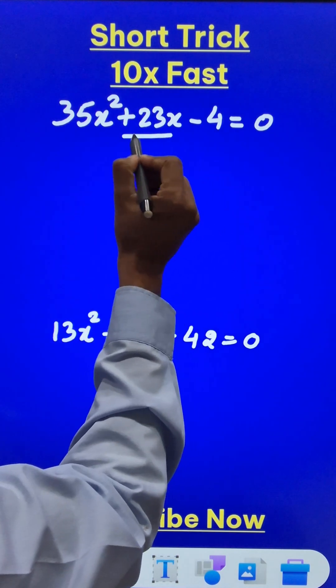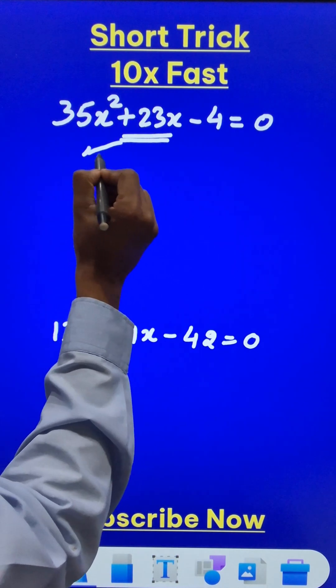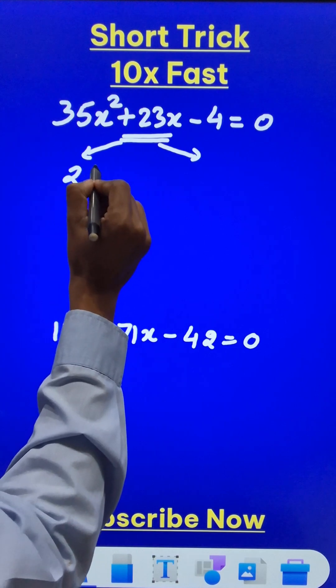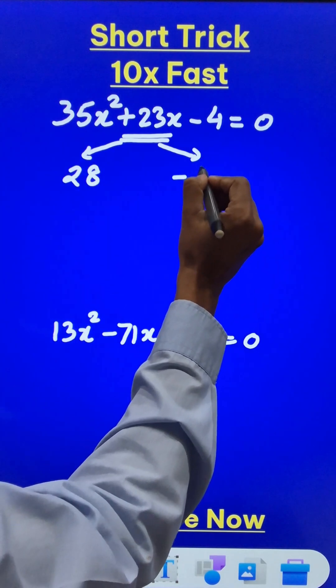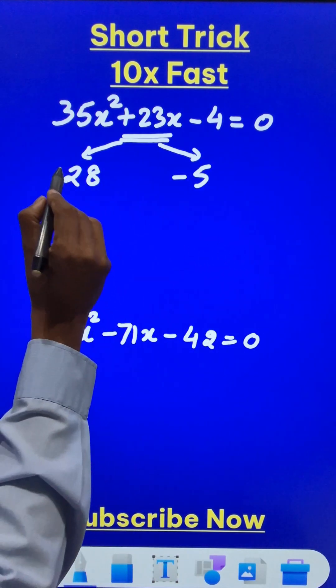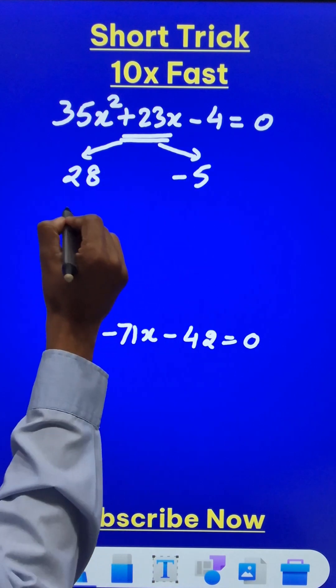So after you break the middle term, like 23, it has to be broken down into 28 and minus 5. Now these are the two middle term split factors. Just change the sign of the two factors. This becomes negative 28 and this becomes plus 5.